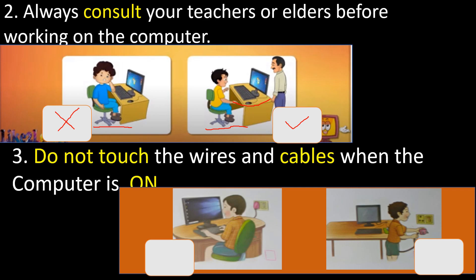Our third rule is: do not touch the wires and cables when the computer is on. If your computer is on, you are not supposed to touch the wire or cable. That is a cross — it is not a good way to use a computer. Always be sincere while using a computer. Here, he is not touching any wires or cables, so that is the right image.